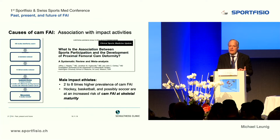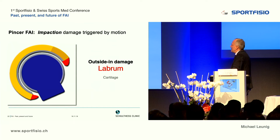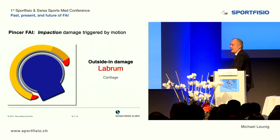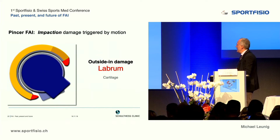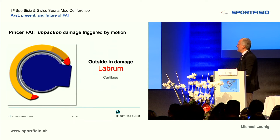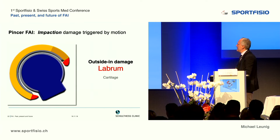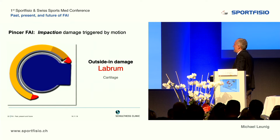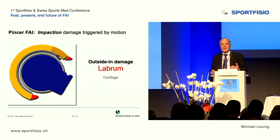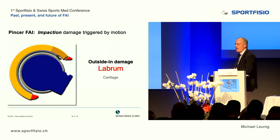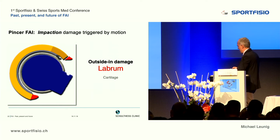Hockey, basketball, and possibly soccer are at increased risk of CAM FAI at skeletal maturity, and martial arts is also very dangerous to the hips. Regarding pincer: it occurs when the socket is too big, like a protrusio hip. During flexion and internal rotation there is a conflict between the neck and the rim, causing labrum deformity. The adjacent cartilage damage is much less pronounced than with CAM deformities. We do not consider pincer as malignant — it is a more benign type of deformity.